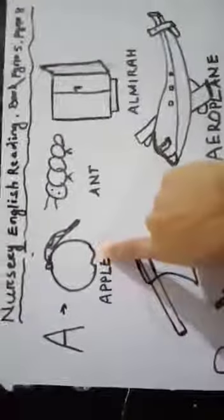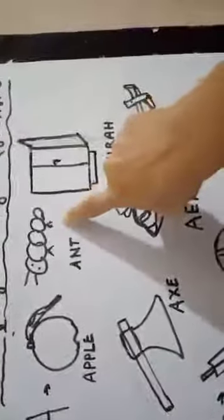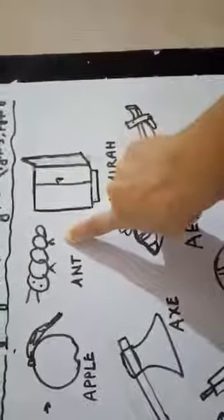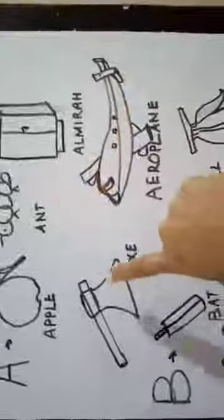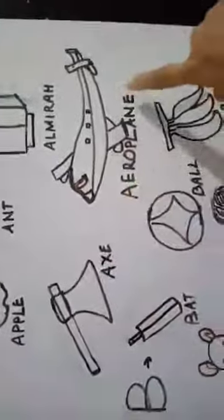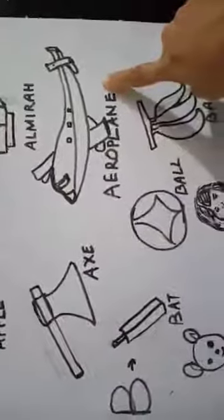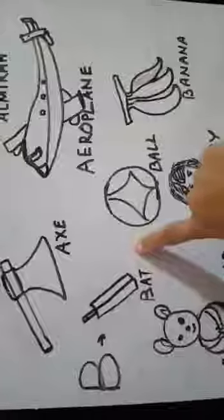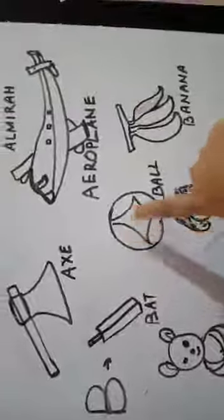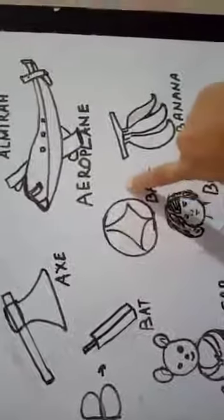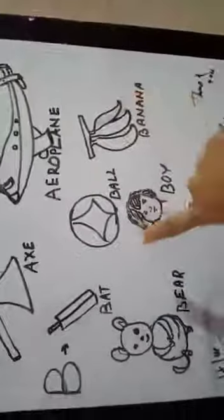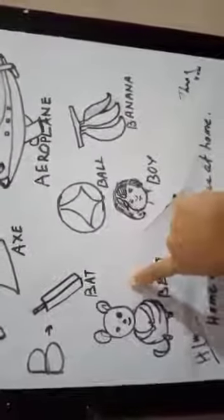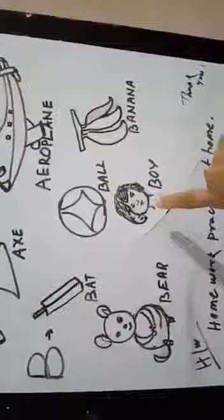A for Apple, A for Aunt, A for Almera, A for Act, A for Aeroplane. B for Bat, B for Ball, B for Banana, B for Bear, B for Boy.